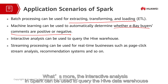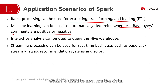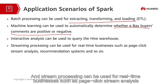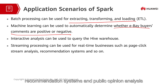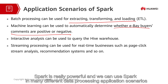The logistic regression model and the Bayesian algorithm in Spark can be used to solve this kind of problem. What's more, the interactive analysis in Spark can be used to query the Hive data warehouse, which is used to analyze the data. And stream processing can be used for real-time businesses, such as page-click stream analysis, recommendation systems, and public opinion analysis. In short, Spark is really powerful and we can use Spark in many different data processing application scenarios.